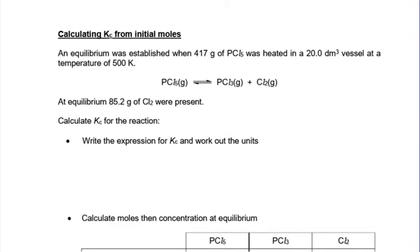And then it tells us at equilibrium a certain amount was present. So we've got an initial amount here was heated, at equilibrium we've got 85.2 grams of Cl2. Right, we're in an exam, got a lot of numbers, we're getting a bit overfaced by it all. Do what you can, write the expression, get two marks, write the expression and get the units.